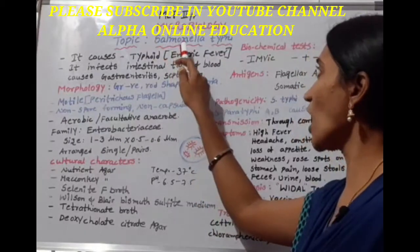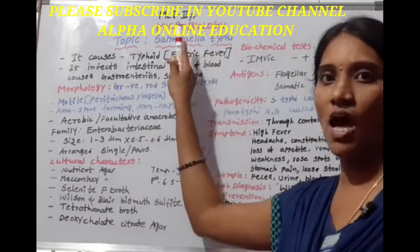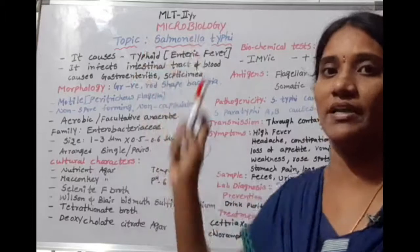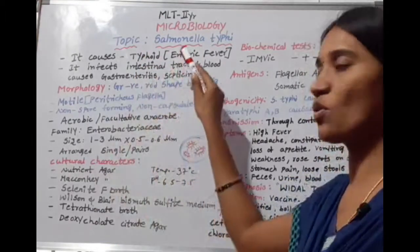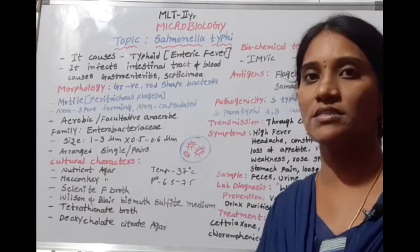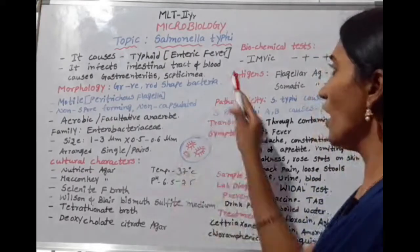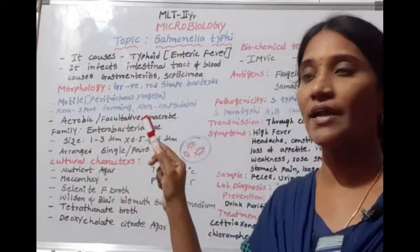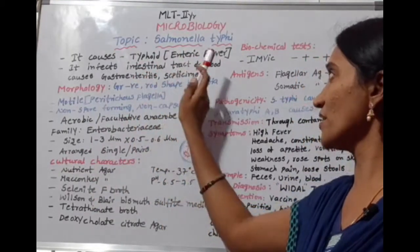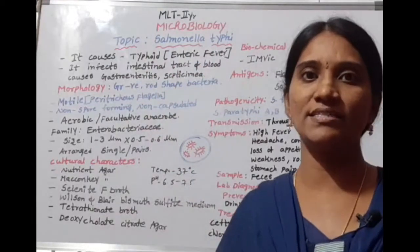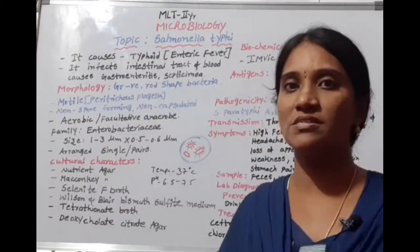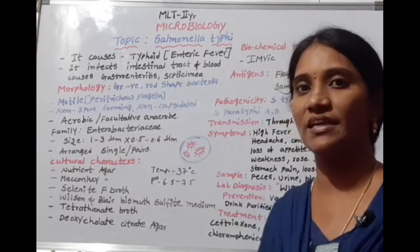Today's topic is Salmonella typhi. It is a pathogenic bacteria that causes typhoid fever, also called enteric fever. This bacteria infects the intestinal tract and blood, causing gastroenteritis and septicemia. Septicemia means infection of the blood — the bacteria present in blood.